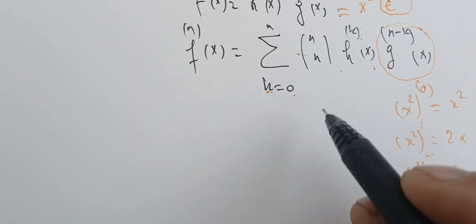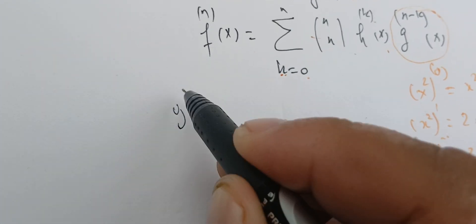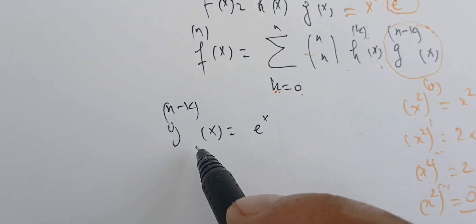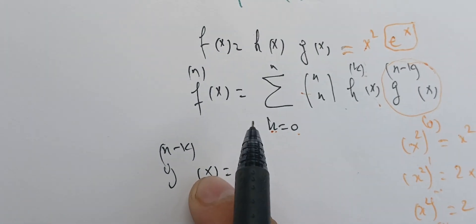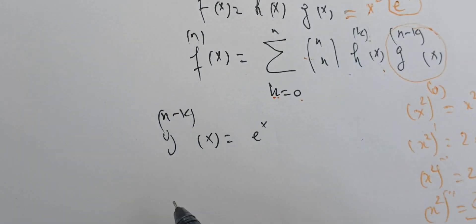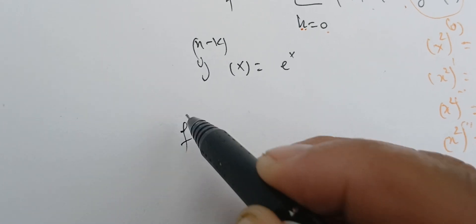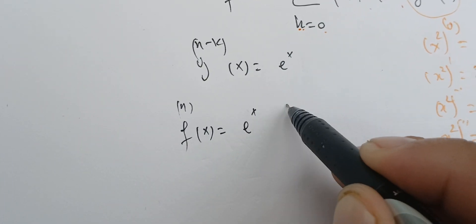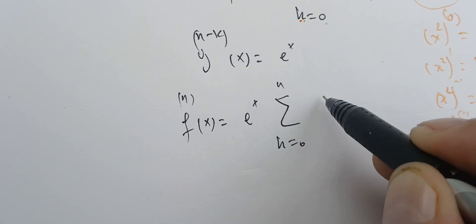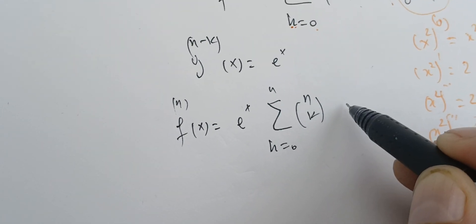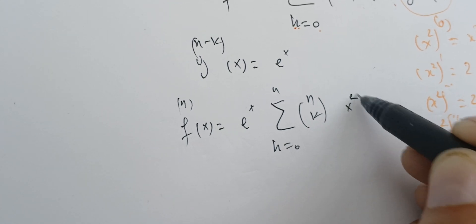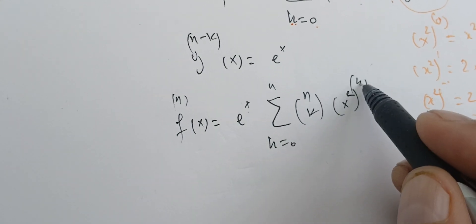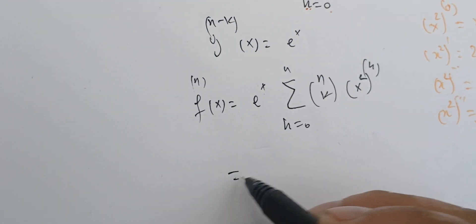Since the derivative of the exponential is itself, the g_{n−k} term is always eˣ. We can factor it out to the front, giving us f⁽ⁿ⁾(x) = eˣ times the sum from k = 0 to n of n-choose-k times the k-th derivative of x².